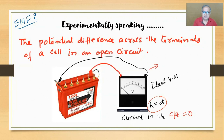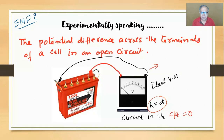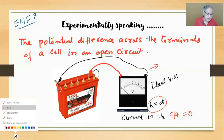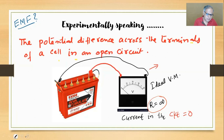When you connect this voltmeter across the terminals of this battery, it reads something. The voltmeter is supposedly measuring potential difference between two points. What you're reading here is what you call EMF. Let's take a battery, connect a voltmeter across it - the voltmeter reads potential difference between two points in a circuit. The potential difference across the terminals of a cell in an open circuit - that is going to be the key definition.